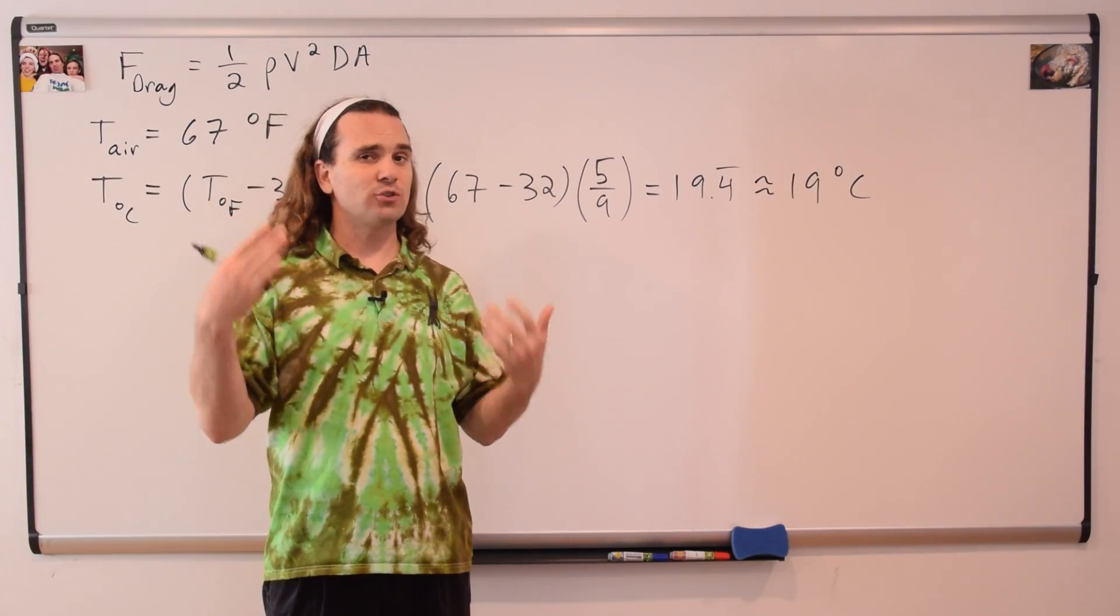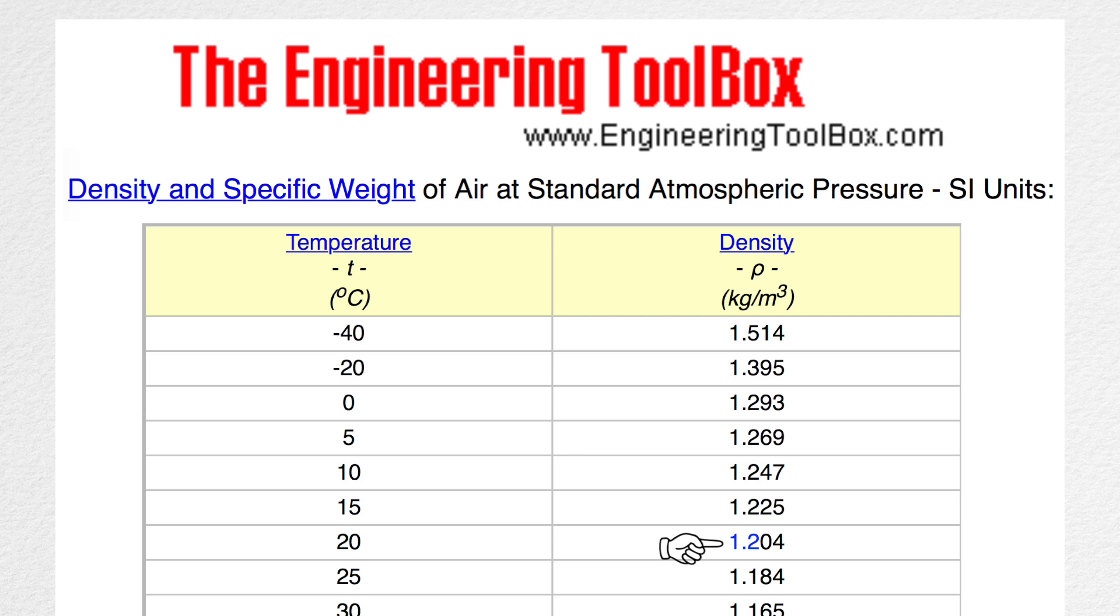According to Engineering Toolbox, 1.2 kilograms per meter cubed is a good approximation of the density of air at 19 degrees Celsius. Now let's talk about capital D, the drag coefficient.